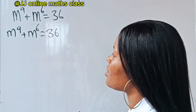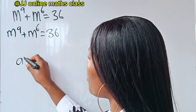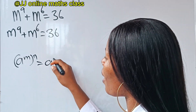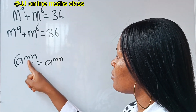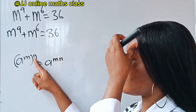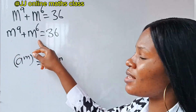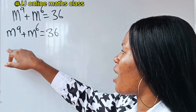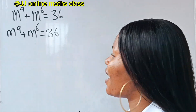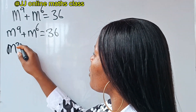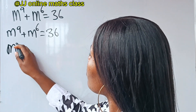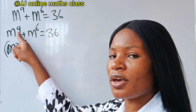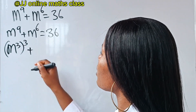Recall the law of exponents which states that a raised to the power of m, raised to the power of n, is equal to a raised to the power of m times n. Using this, we can write m to the power of 9 as m to the power of 3, raised to the power of 3, since 3 times 3 gives us 9.